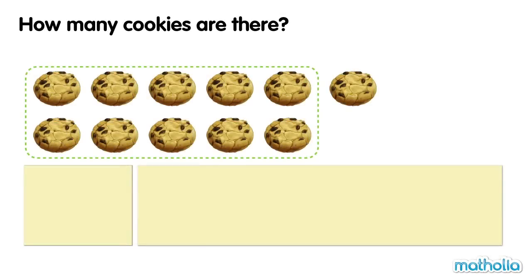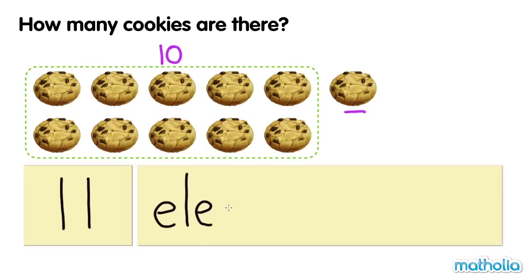How many cookies are there? Ten, eleven. There are eleven cookies. Eleven.